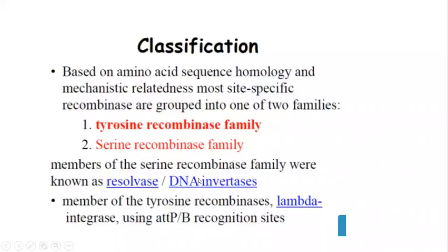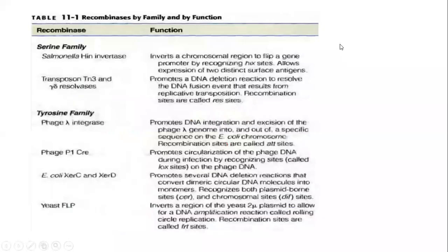Now for classification: under conservative SSR, there are two types depending on the amino acid present at the active site of the enzyme — the tyrosine recombinase family and the serine recombinase family. These recombinases are also known as resolvase and DNA invertase. Members of the tyrosine recombinase family, and lambda integrase, use attP and attB recognition sites.